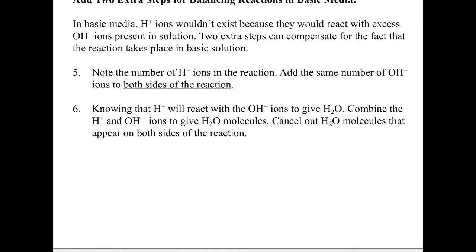This is an extension of the previous video. In this video, we're going to look at how to balance reactions in basic media. It turns out there are two extra steps that you have to do when you're in basic media. What you have to recognize is that in basic media, we can't have H+ ions hanging around. So at the end of the last video, our balanced reaction had H+ on one side. These two extra steps are going to compensate for the fact that the reaction takes place in basic solution, and that the predominant species is OH⁻, not H+.